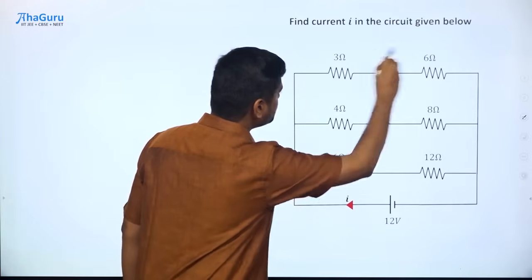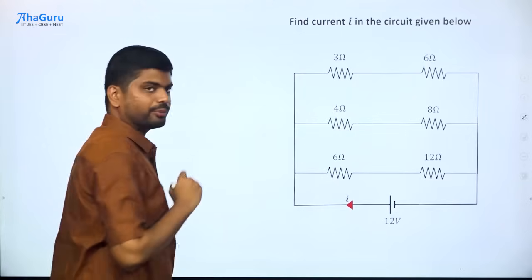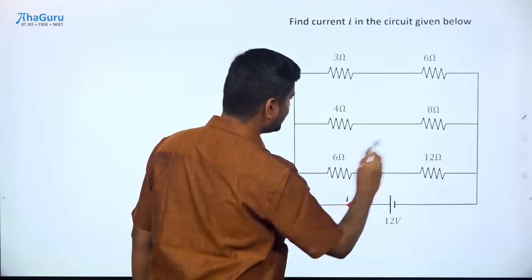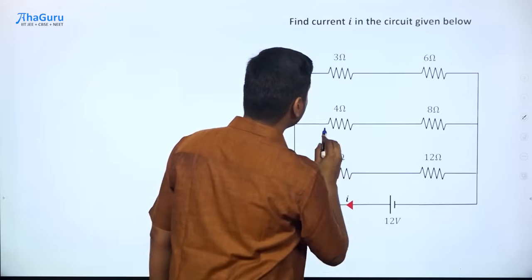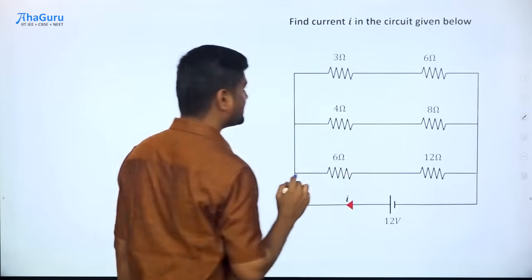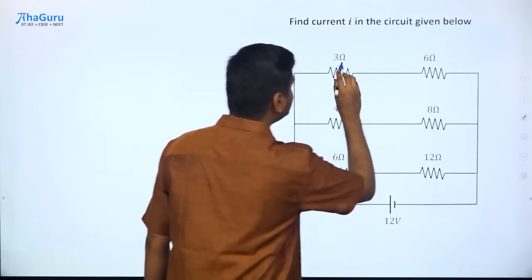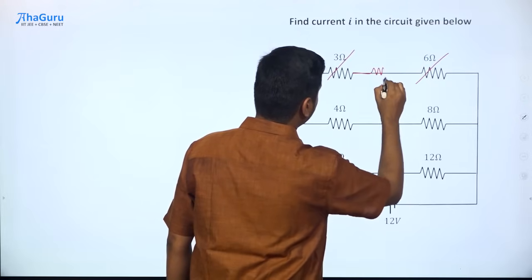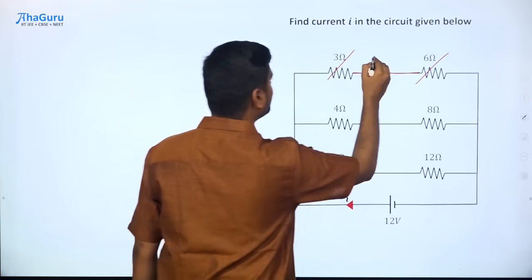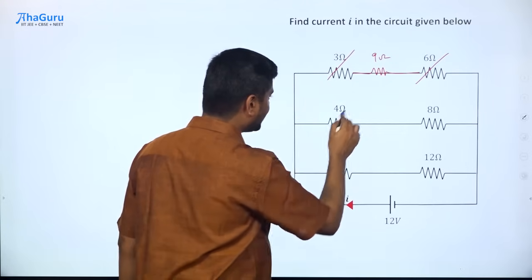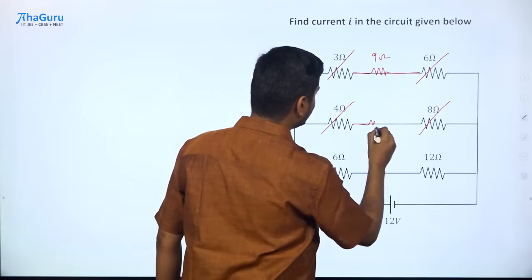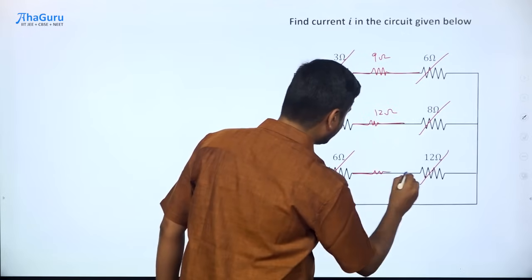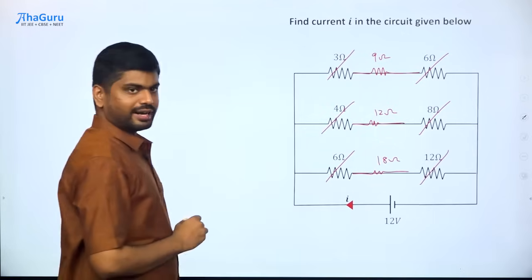We get back to the simplified circuit with the 5 ohm and 7 ohm resistors removed. We have a 3 ohm and 6 ohm resistor, a 4 and 8, and a 6 and 12. This is a simple circuit to solve: the 3 ohm and 6 ohm are in series, so I can replace them with a single 9 ohm resistor. Similarly, I can replace the 4 and 8 ohm pair with a 12 ohm resistor, and the 6 and 12 ohm pair with an 18 ohm resistor.